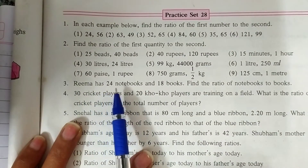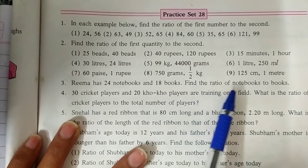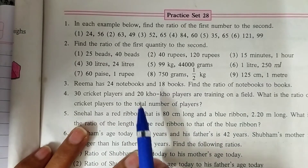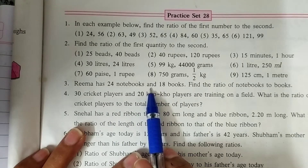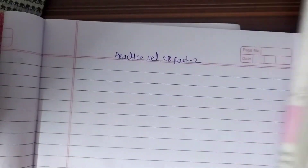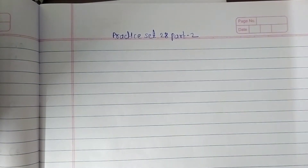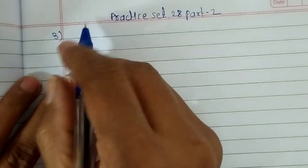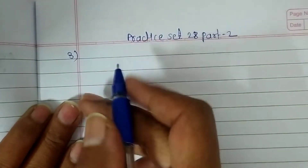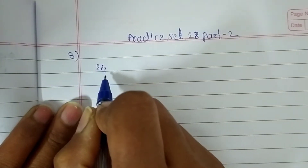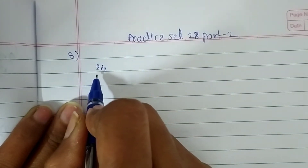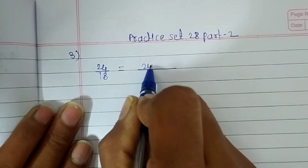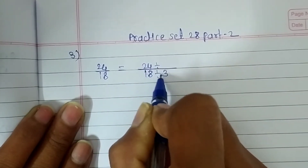Question number three: Rhema has 24 notebooks and 18 books. Find the ratio of notebooks to books. So we are going to write the number of notebooks first — it is 24 — and then the number of books are 18.